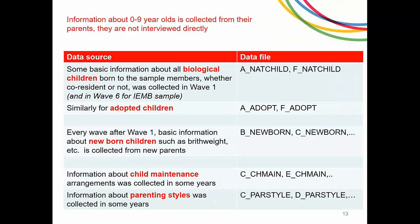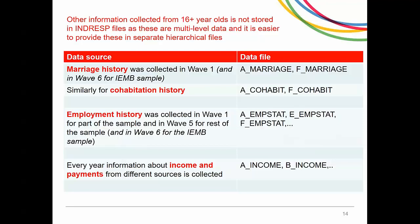Information about 0 to 9 year olds is collected from their parents as they are not interviewed directly. This information is stored in separate files, mostly because these are multi-level files at the level of the parent and their children, and so easier to provide separately. Although information collected during adult interviews is generally stored in INDRESP files, there are exceptions — including information about children, and any information about events or multiple sources such as partnership history, employment history, income and payments from different sources, etc.